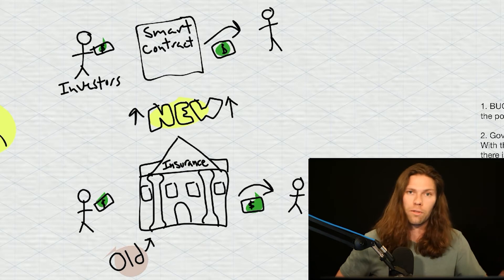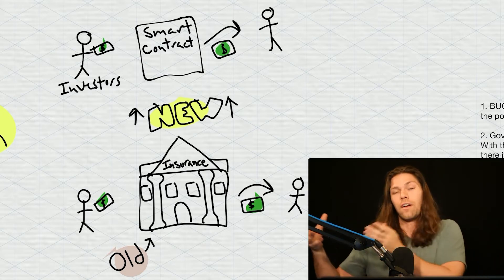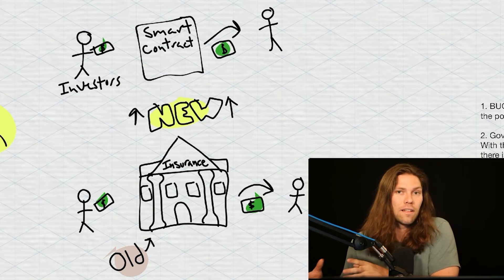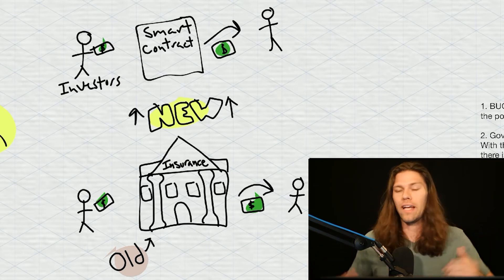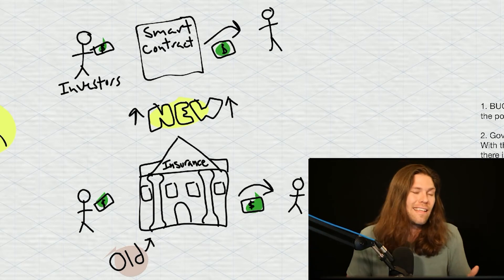They use that profit to pay for employees, for their buildings, for their administrative costs, and then take out their end net income at the end of the day. And everyone's happy. You paid into the insurance, your house burned down, you got paid. The insurance company still made a profit. But there's friction here that doesn't need to be here.